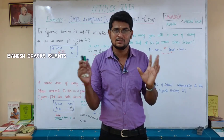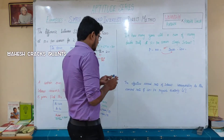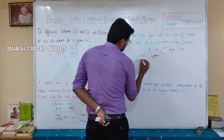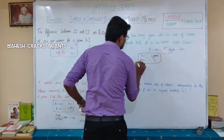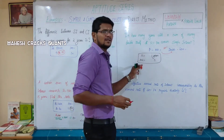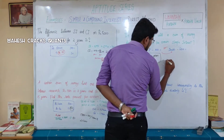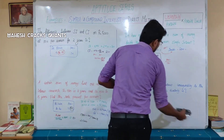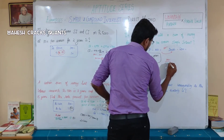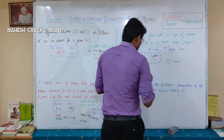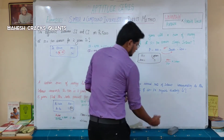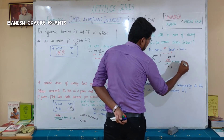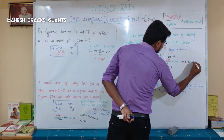At 12% per year, to get a 100% increase we need 100 divided by 12 years. That equals 25 divided by 3, which is 8.33 years.